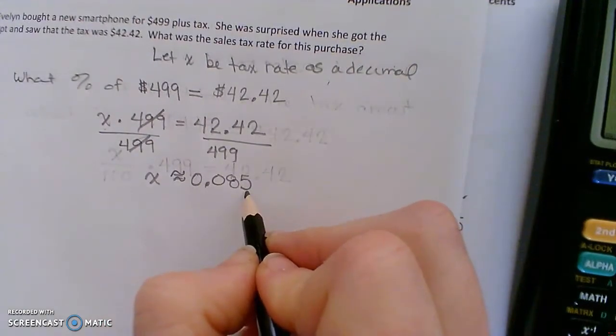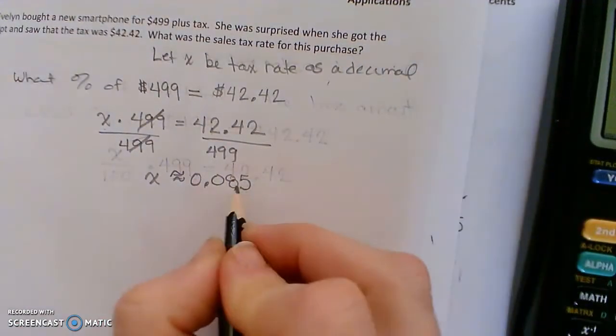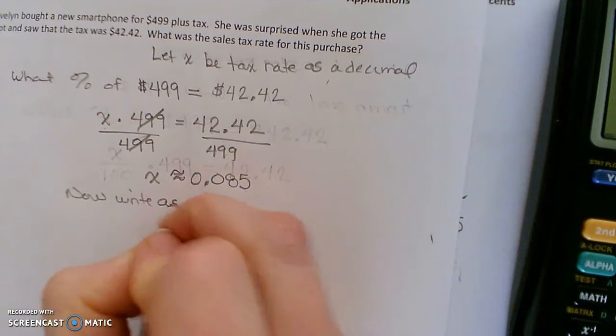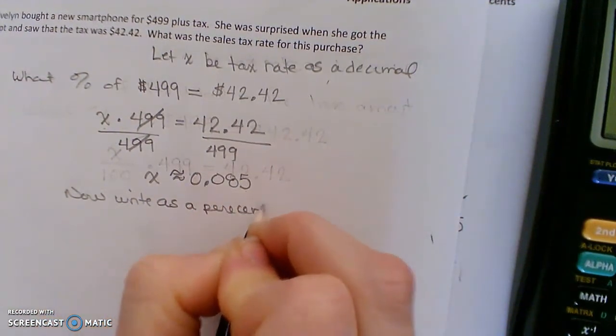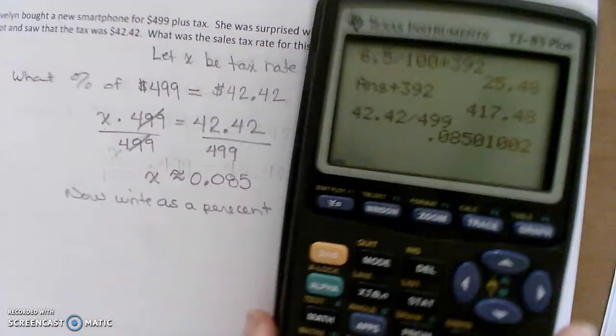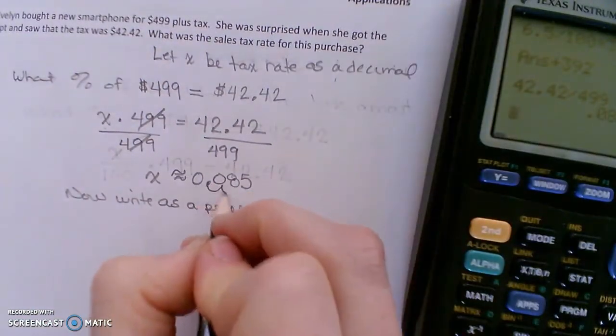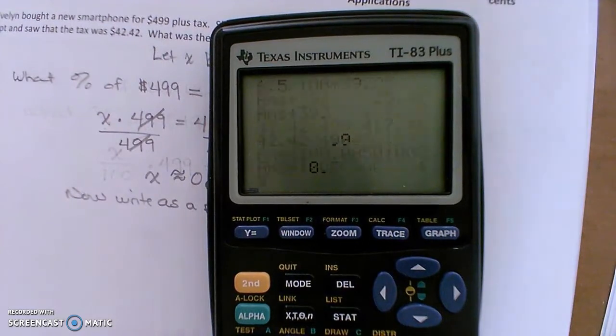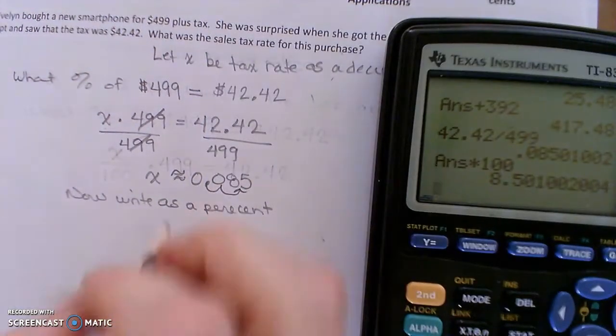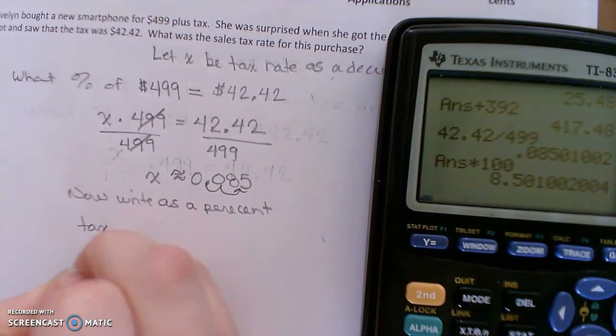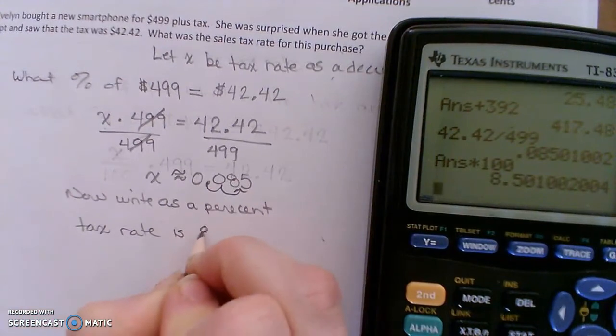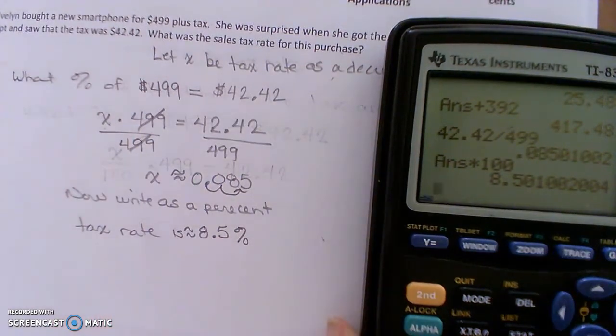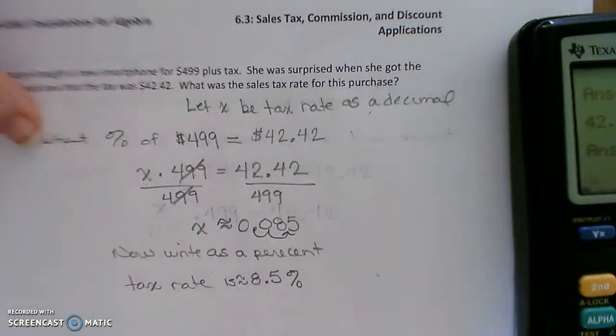So then to write it as a percent, we have to multiply by 100 to move the decimal point over two places. So if you wanted to do that on your calculator, just say times 100, and you see that moves the decimal point over two places for you. So the tax rate is approximately 8.5. So it's approximately 8.5 percent, which is kind of a high tax rate.